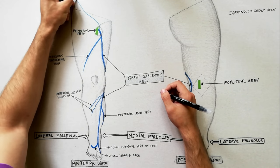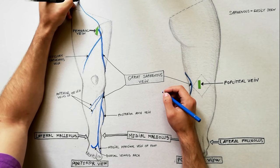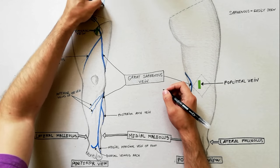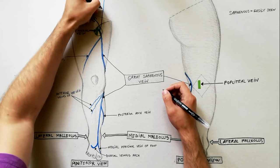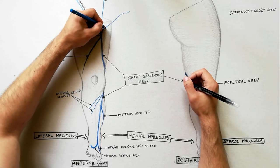Just before piercing the cribiform fascia, the great saphenous vein receives superficial circumflexed iliac vein, superficial epigastric vein, and superficial external pudendal vein.